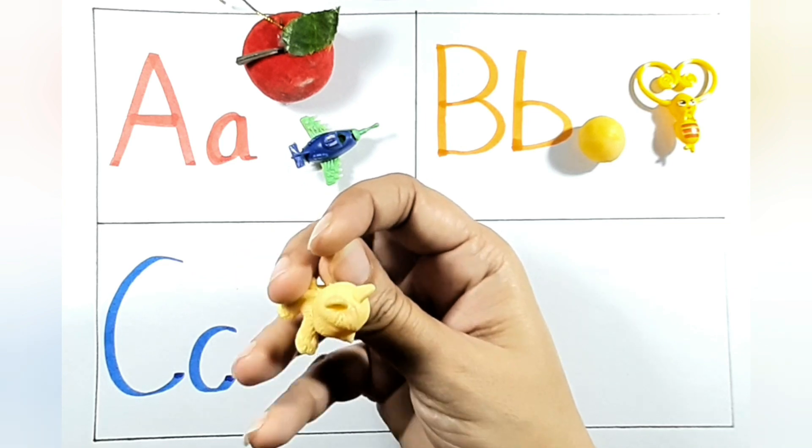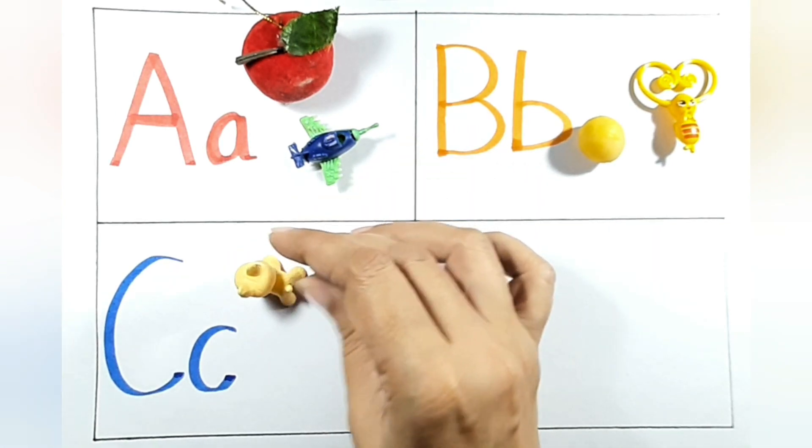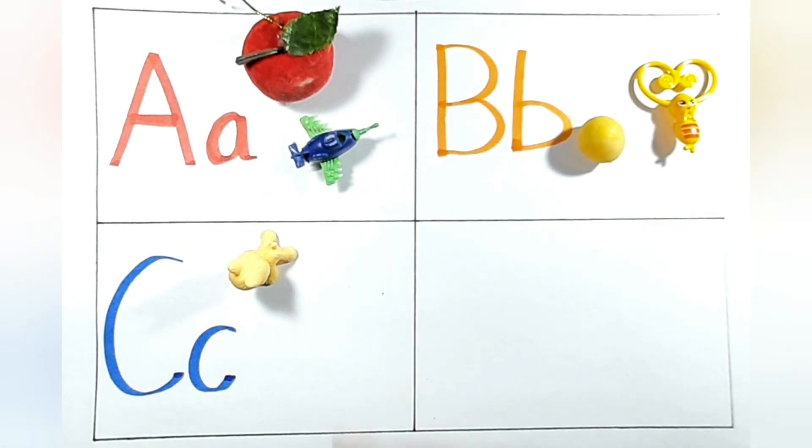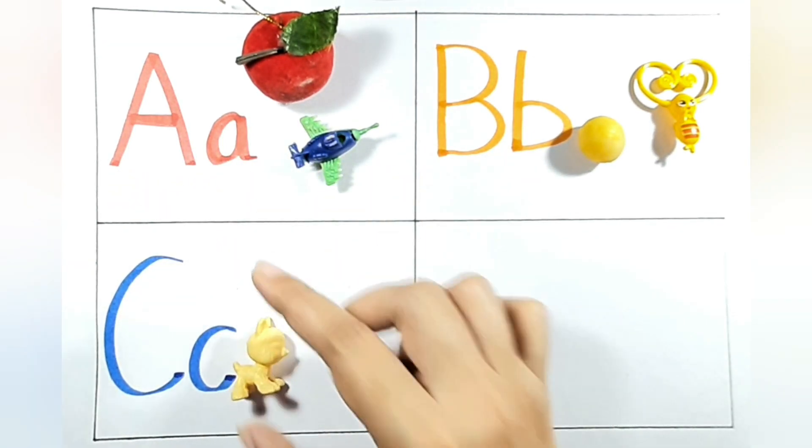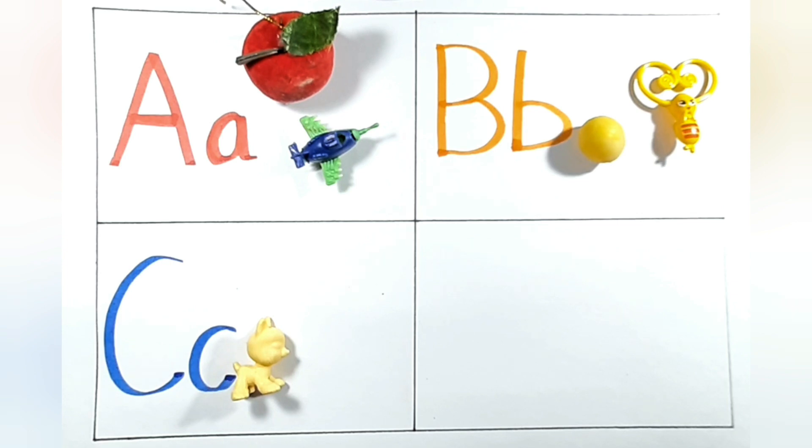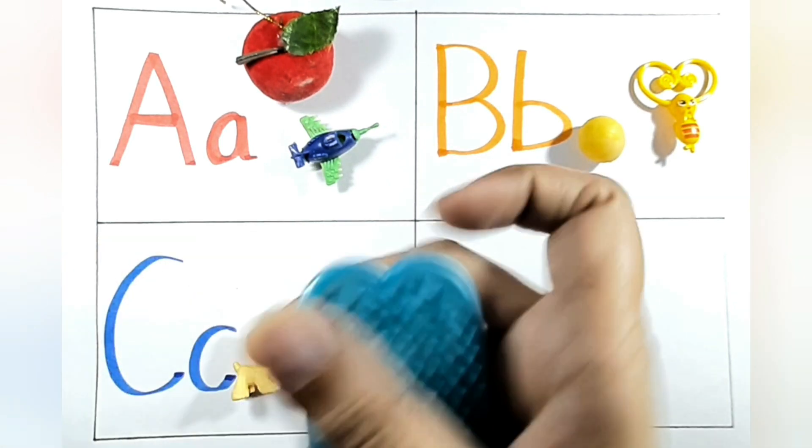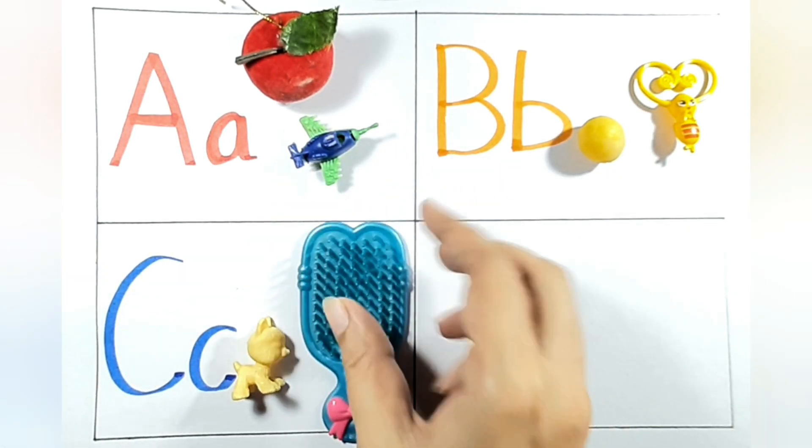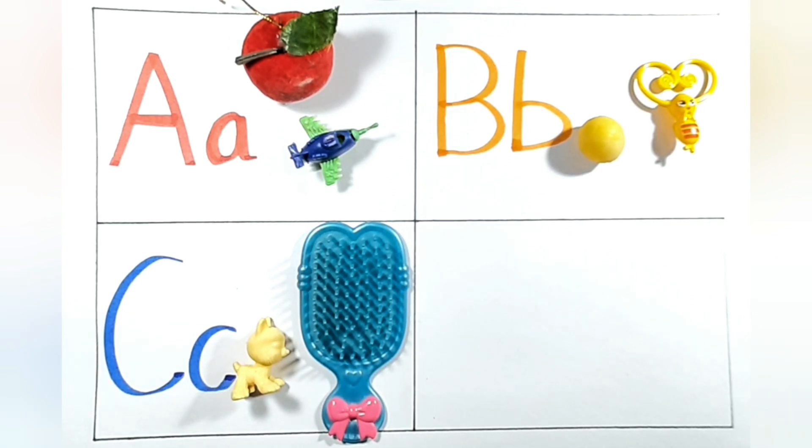Here is my cat. Let me show you. Yes, this is the cat. C for cat. One more thing I have. Yes, C for comb. C for comb.